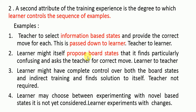In another scenario, the learner itself proposes a board state it finds confusing and asks the teacher for the correct move — this is learner-to-teacher. The learner might also have complete control over board states and indirect training, finding solutions itself without requiring a teacher. Finally, the learner might experiment with novel board states not yet considered. These are the four examples of how the learner can control the sequence of examples.